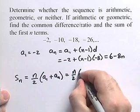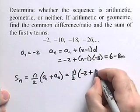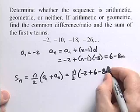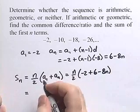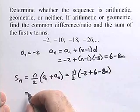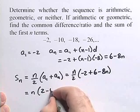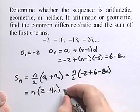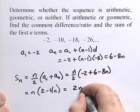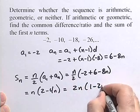So we'll write n over 2 times negative 2 plus 6 minus 8n. And if we clean that up, we'll get that the sum of our first n terms will be n times 2 minus 4n, or we could write 2n times 1 minus 2n.